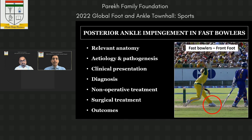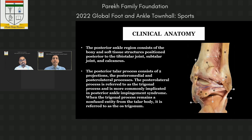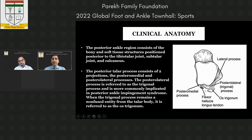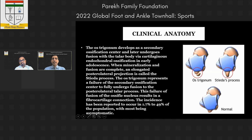In this lecture I'll cover the relevant anatomy, etiology and pathogenesis, clinical presentation, diagnosis, non-operative treatment, surgical treatment, and outcomes. The posterior ankle region consists of bony and soft tissue structures posterior to the tibiotalar joint, subtalar joint, and calcaneus. The posterior talar process has two projections: the posteromedial and posterolateral processes. The posterolateral process is the trigonal process, most commonly implicated in posterior ankle impingement.